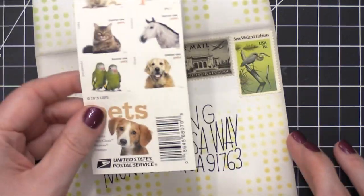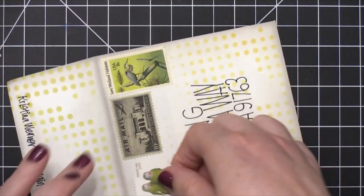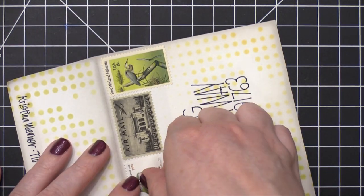And then I'm going to bring in this more current postage stamp of two parakeets. I thought the green shades were just perfect to go with this envelope design.